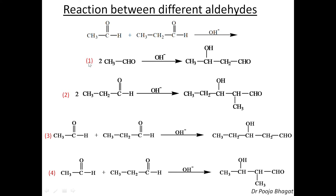Let us discuss all the reactions one by one. In the first reaction, this is the self-condensation of ethanol — one molecule of ethanol reacts with another molecule of ethanol to give this aldehyde. In the second case, one molecule of propanol reacts with another molecule of propanol to give the self-condensed product. The third and fourth reactions are different because one molecule of acetaldehyde or ethanol reacts with another molecule of propanol — one will be the enolate ion and another will behave as an electrophile.